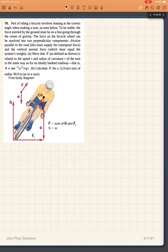Let's look at problem 70 from University of Physics by OpenStax. When you're riding a bicycle and you're making a turn, you lean your bike.